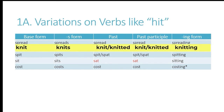The next one is knit, which actually has two acceptable forms in the past and the past participle. It follows the same pattern as hit — knit, knit, knit — but it can also take on a regular verb ending, ed. For example, knitted or knitted in the past and past participle. Notice that the T is also doubled before you add the ed ending in this case.